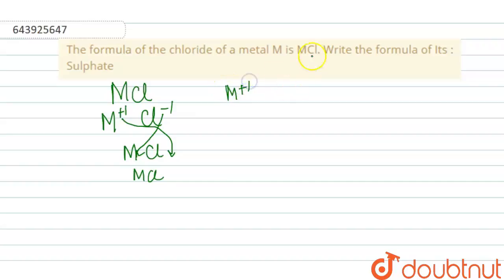Now we have sulfate ion. So sulfate ion is SO4 two minus. So when MSO4 will be formed...